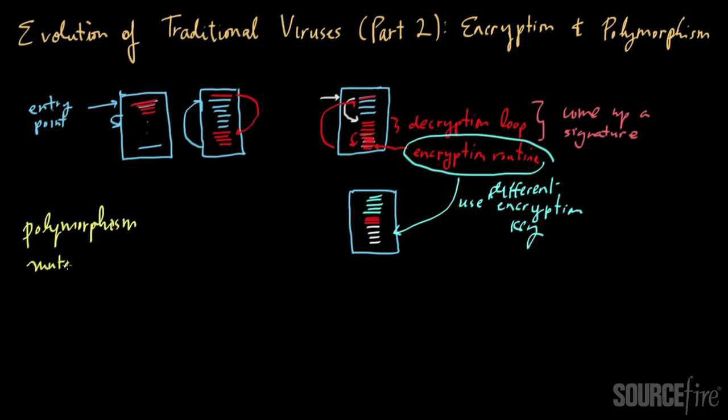And the mutation engine would allow you to generate completely different or seemingly different looking decryption routines. So instead of having a static decryption routine that works with everything, you would now have a mutation engine as part of the virus payload. And that mutation engine would in turn generate a new decryption engine.